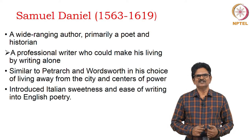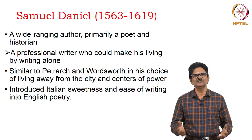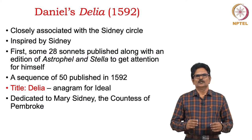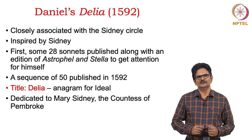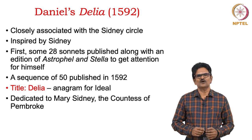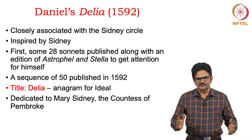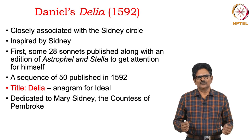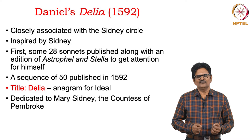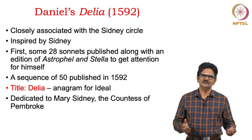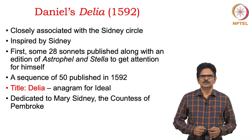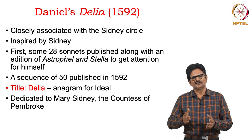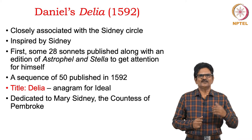Daniel translated from Italian writers, and so he introduced the Italian sweetness and ease of writing into English poetry. The sonnet sequence that Samuel Daniel published in 1592 is called Delia. Daniel is closely associated with the Sidney Circle, and it is said this collection of sonnets in Delia was inspired by Sidney's own writings. When Daniel published his sonnet sequence, he published it along with Sidney's sonnet sequence, Astrophel and Stella.